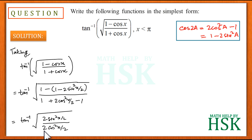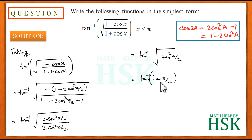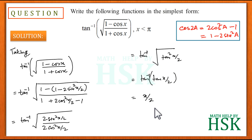The 2s cancel, leaving tan inverse of square root of (tan²(x/2)). Cancelling the square root and the square, this becomes tan inverse of tan(x/2), which equals x/2. That is the required answer.